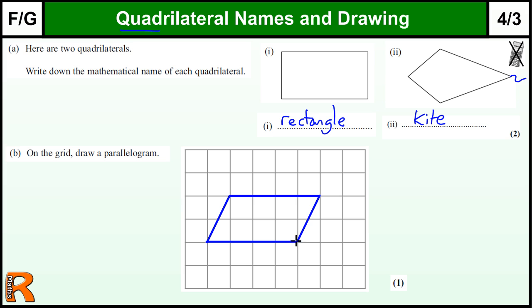But like I said, technically a square is a parallelogram, so you could have drawn a square, and that would get you the mark. A rectangle is a parallelogram, so you could have drawn a rectangle of any size, and that would have got you the mark.